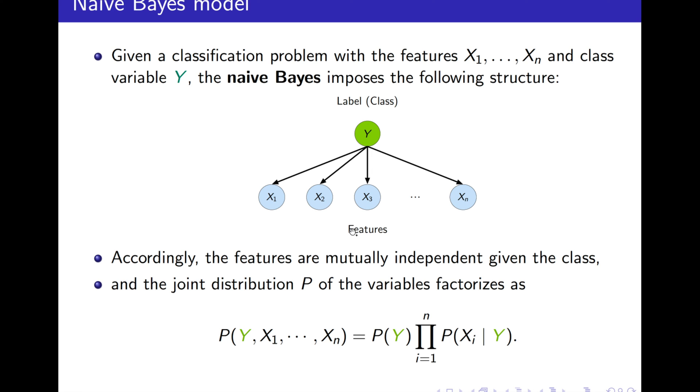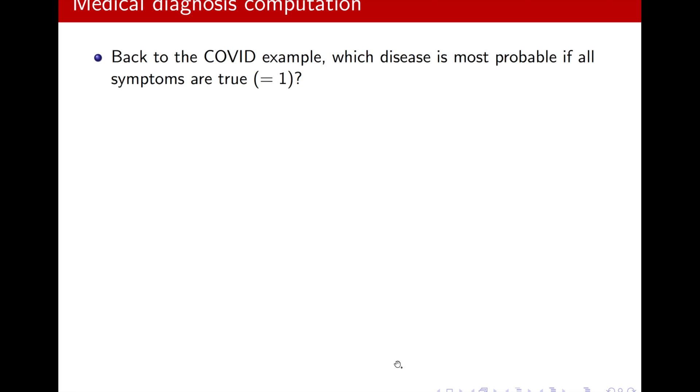So, the joint probability distribution of P, well, I can just use the Bayesian network factorization. Each node condition on its parent, Y doesn't have a parent, so P of Y and all the symptoms, they only have one parent, P of Xi condition on Y. This simple form.